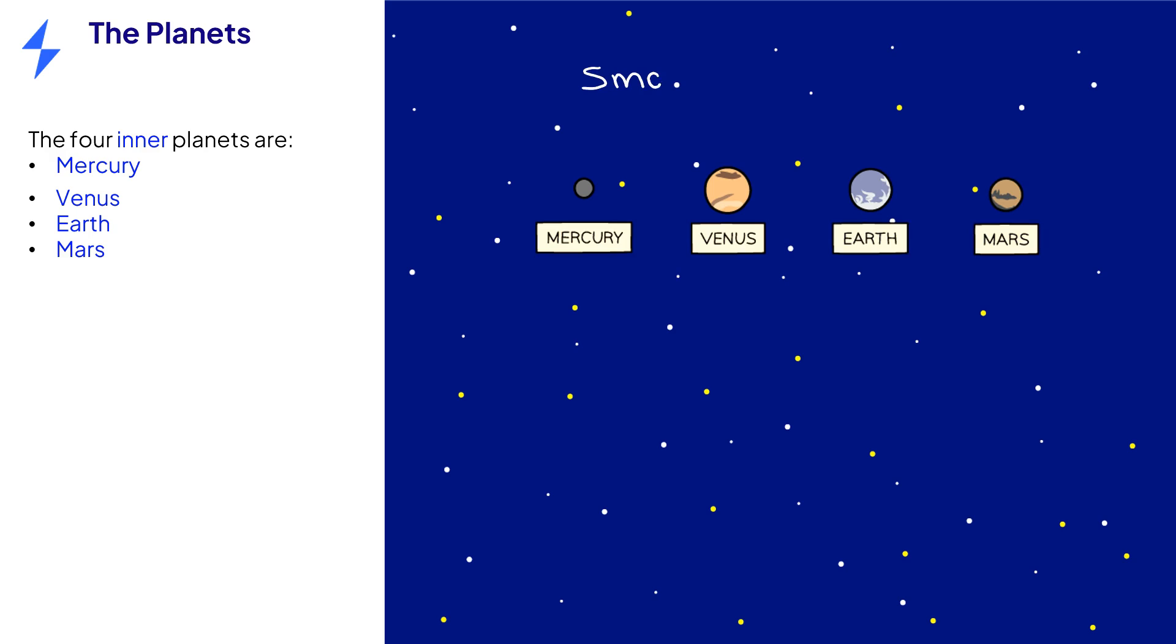There are eight planets in the solar system. The inner planets are Mercury, Venus, Earth and Mars. These four planets are small and made from rocky materials.